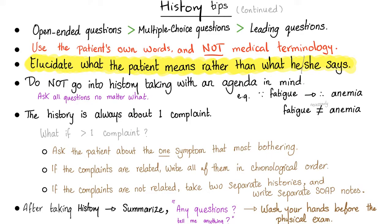Always elucidate what the patient means rather than what they say. If the patient says 'I'm throwing up blood,' don't immediately assume hematemesis — it could be hemoptysis. Ask: 'Are you coughing up blood or vomiting blood?' This is critical; otherwise you'd do an abdominal exam instead of a chest exam. Similarly, if the patient says 'I'm dizzy,' ask what they mean. If the room is spinning around them, that's vertigo, not dizziness.